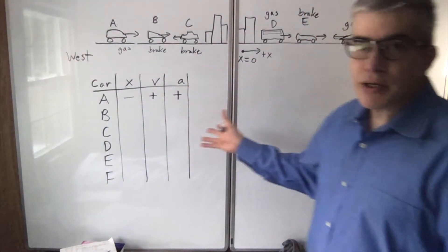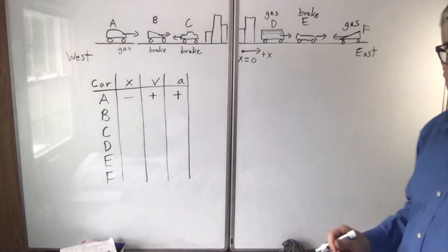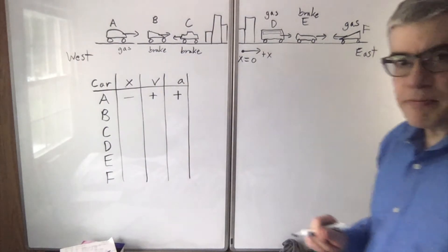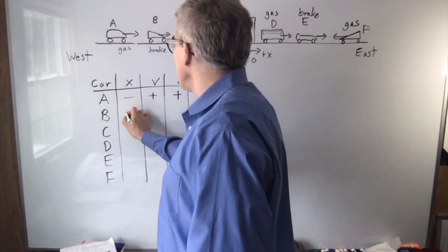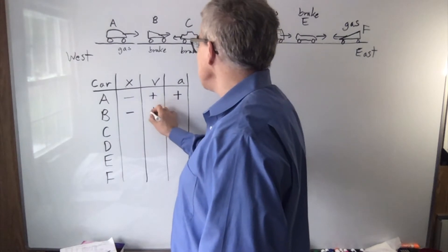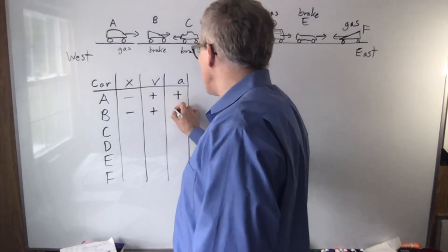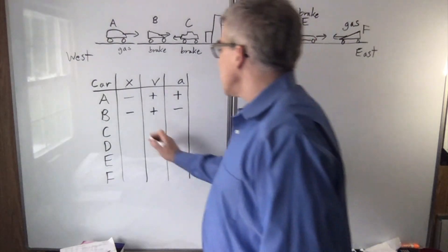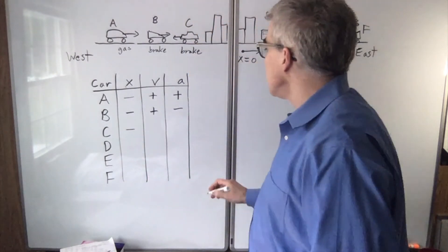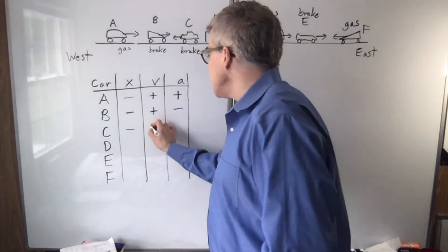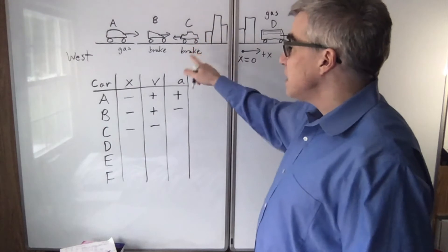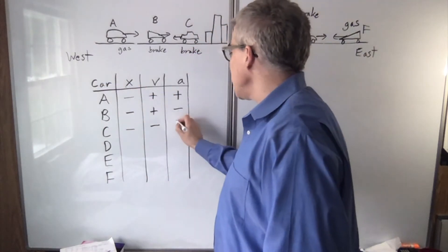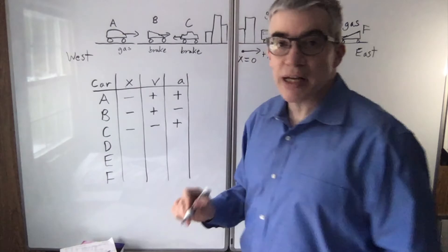Now take a moment, see if you can figure out what the rest are. Car b is west of town, driving east, but hitting the brake, so those are opposite. Car c is west of town, driving in the negative direction, but hitting the brake. If you're driving negative and hitting the brake, that's actually positive acceleration.